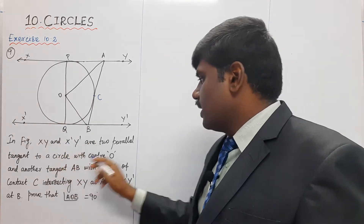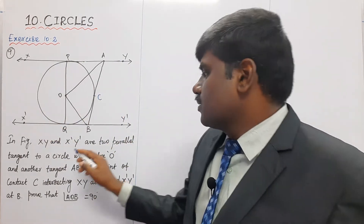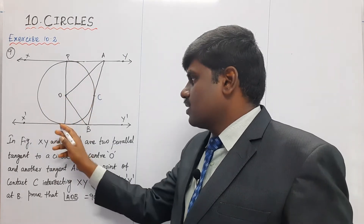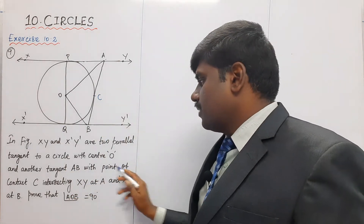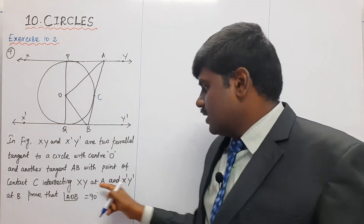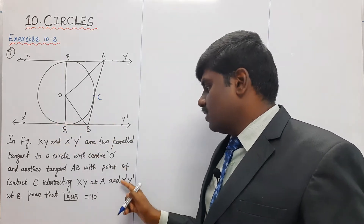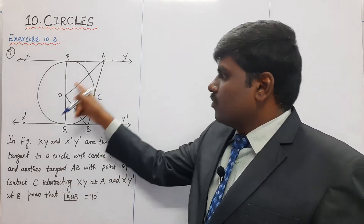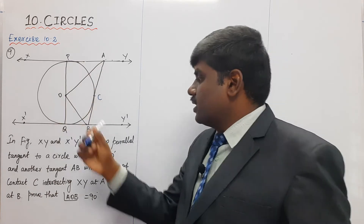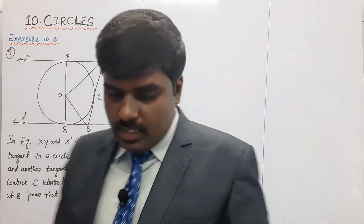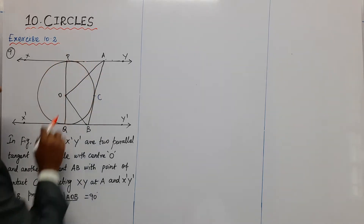In the figure, XY and X'Y' are two parallel tangent lines to the circle with center O. Another tangent AB has a point of contact C, intersecting XY at point A and X'Y' at point B. We need to prove that angle AOB is equal to 90 degrees.